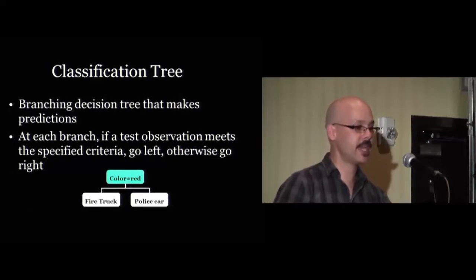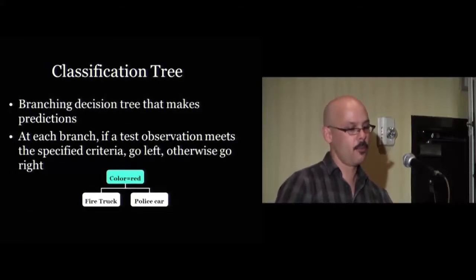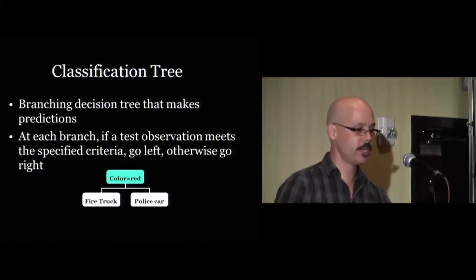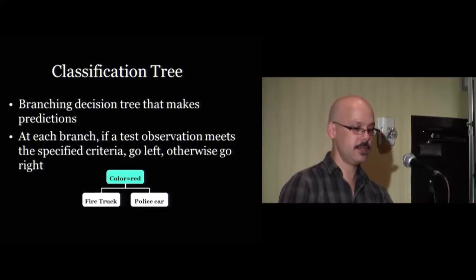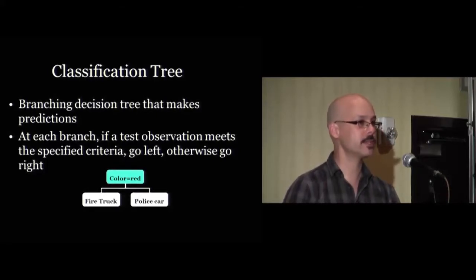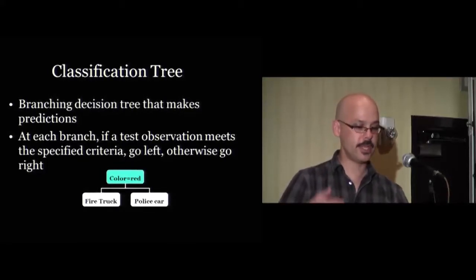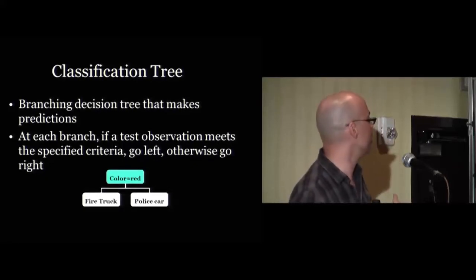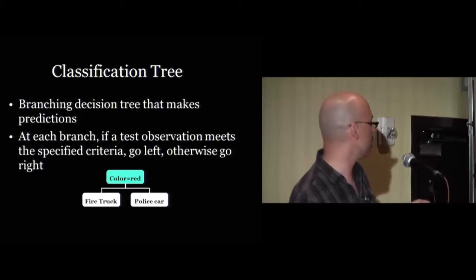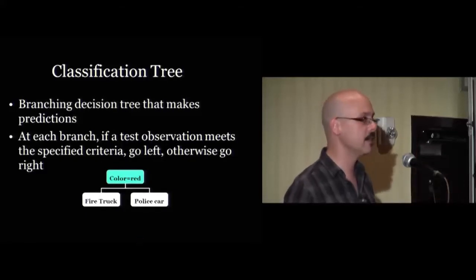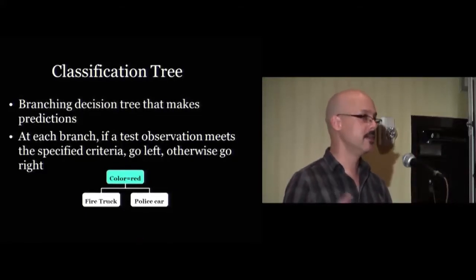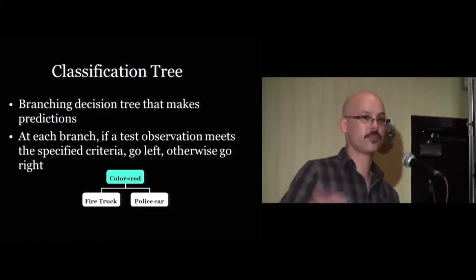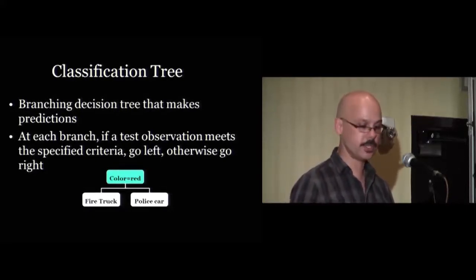Our approach is a classification tree, where an algorithm makes a branching decision tree. At each branch there's a test — if true, go left; if false, go right. For example: is the color red? If yes, guess fire truck; if no, guess police car. It's a logical decision tree where you ask a question, get an answer, and go left or right.